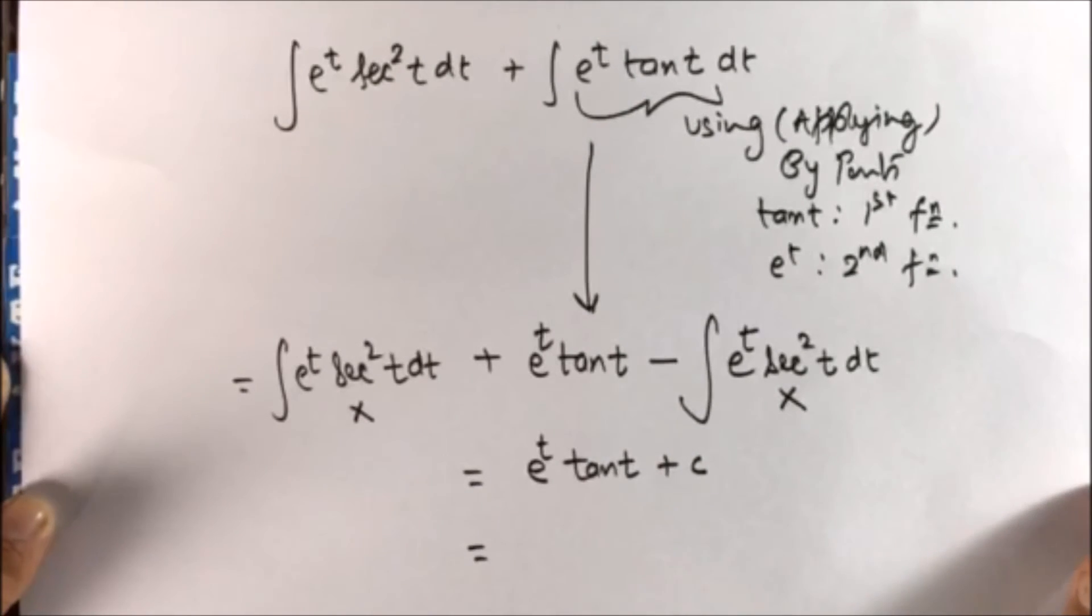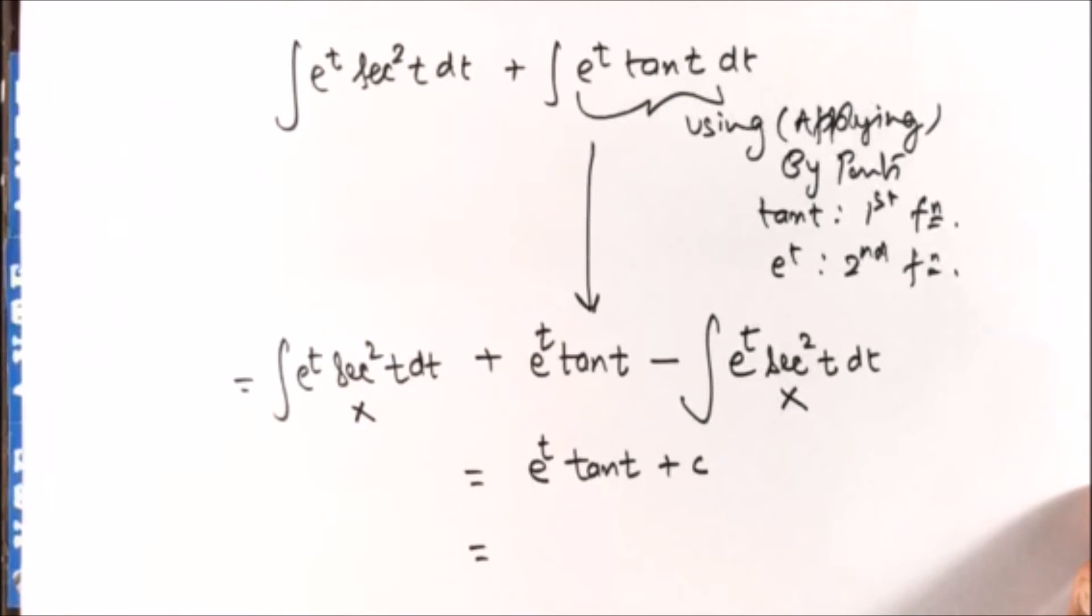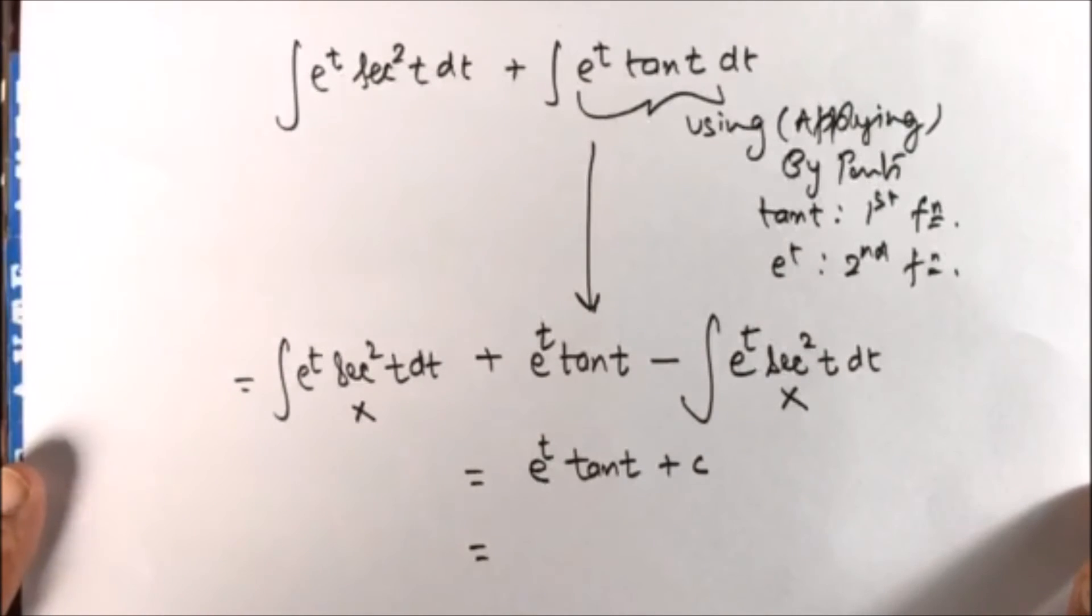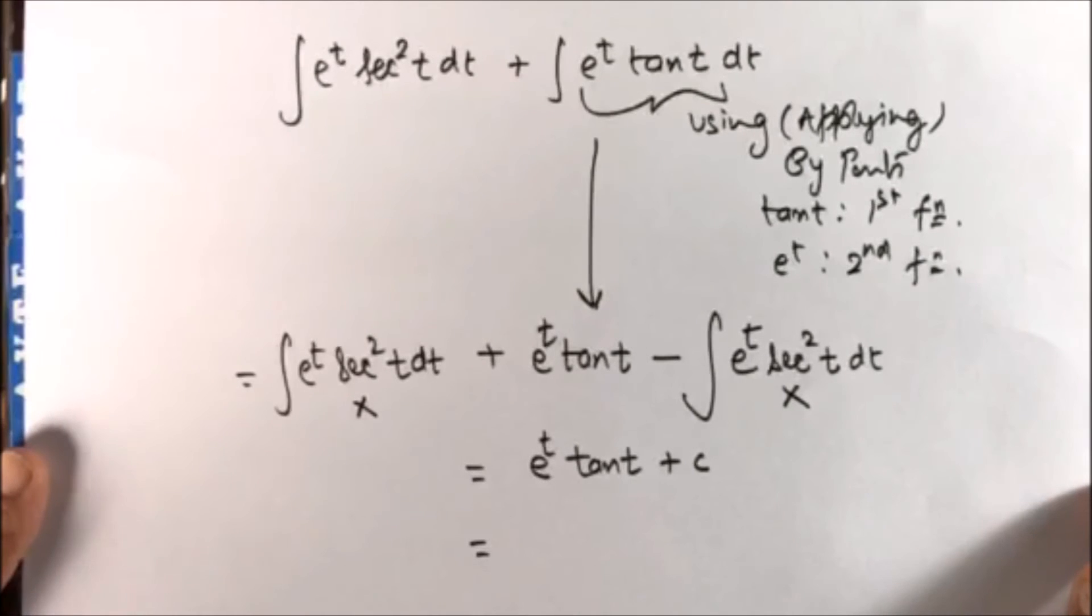Now sometimes what happens, we go very excited and we leave the answer like this. So examiner can cut marks because the original variable is x. So do not forget to put answer in terms of x.